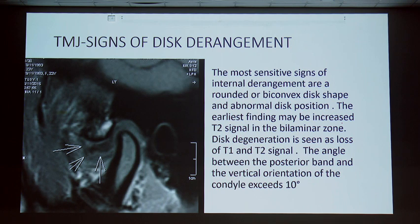There are three types of disc displacement: anterior, medial, or posterior. Disc displacement with reduction means the disc returns to normal position when the mouth is opened. Without reduction means it does not return. Chronic anterior disc displacement can lead to disc perforation and degenerative changes — this represents the third stage.